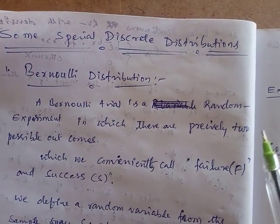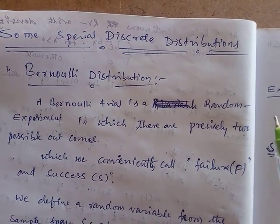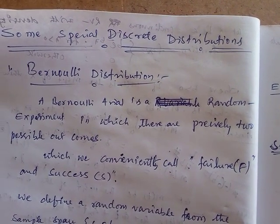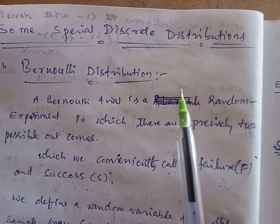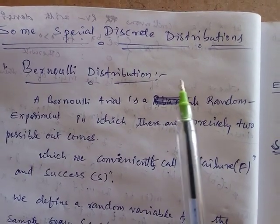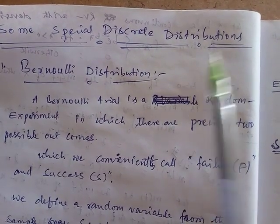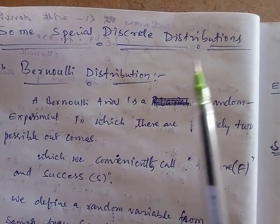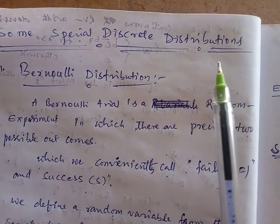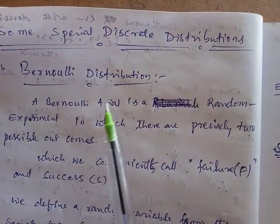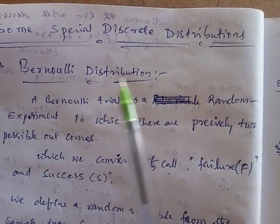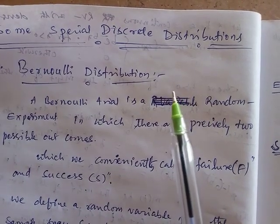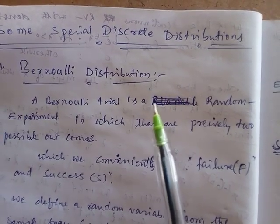If x is a discrete random variable, you have some discrete distributions. The first one is Bernoulli distribution — just one of the distributions among discrete distributions.